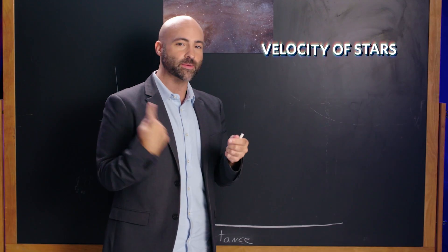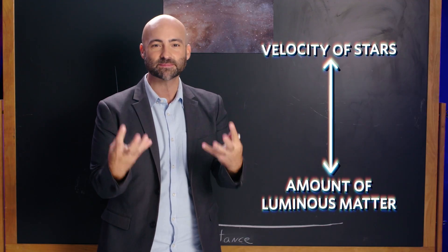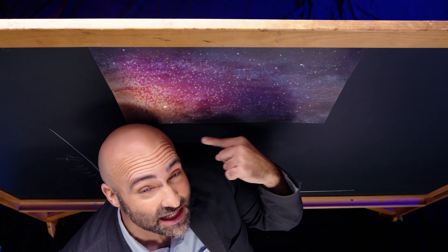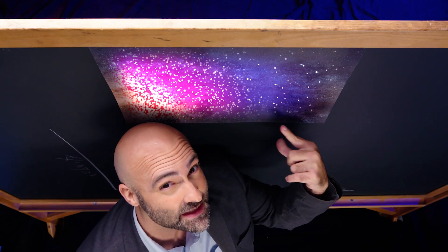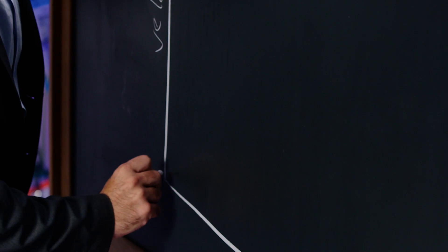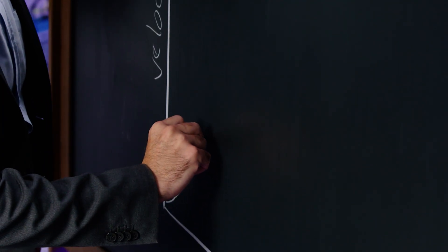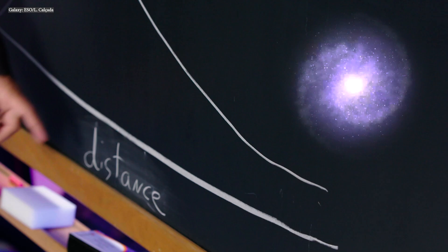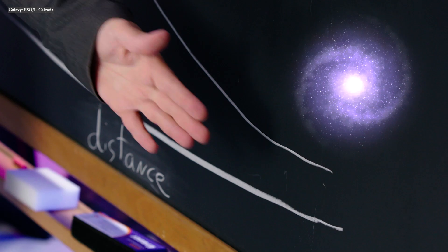Rotation curves are a connection between the velocity of stars in orbit around a galaxy and the amount of luminous matter we can see in that galaxy. This is basic Newtonian mechanics — simple gravity. When we look at a galaxy, most of the material is compressed into the core, and then it thins out further away. So a plot of velocity versus distance should show stars orbiting faster and faster near the center, then slowing as you get further out, with the most distant stars not orbiting very quickly at all.